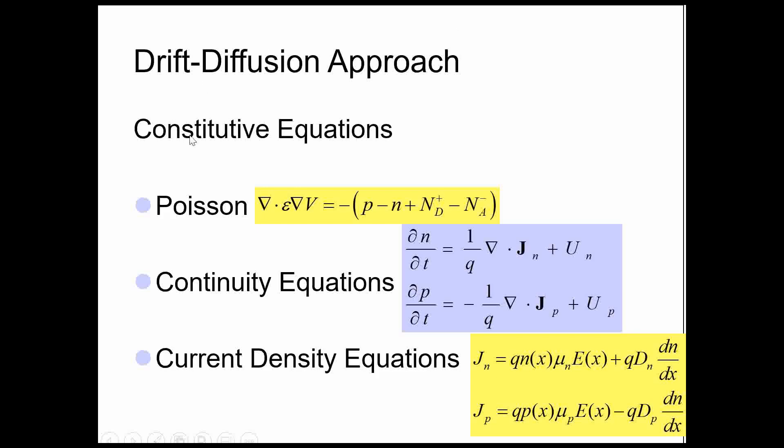Basically we are restricting ourselves to drift-diffusion approach. Here Poisson equation is there. You can see all the charge, whatever charges are there, they are responsible for electric field generation and band bending. Now you have continuity equation for electrons and continuity for holes, and current density equations whereby for electrons you can see the drift equation and then the diffusion equation. That's what we are solving, these three equations.